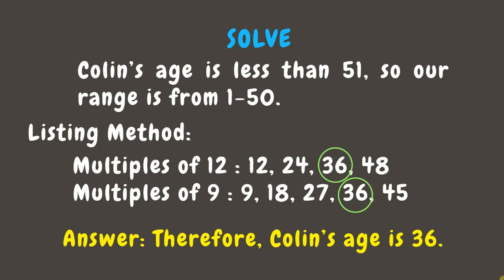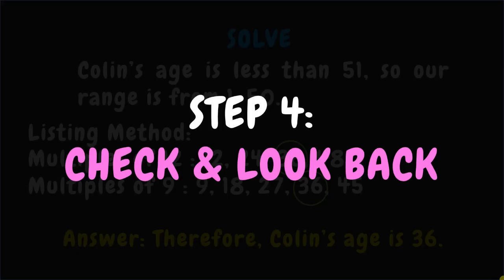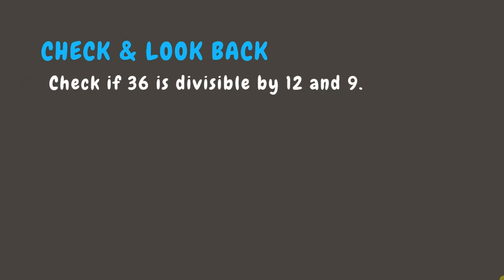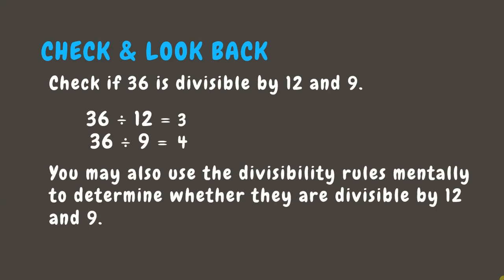On to our last step: Check and Look Back. This step is again optional but helpful to ensure our answer is correct. We can double-check to confirm that 36 is divisible by both 12 and 9 by dividing 36 by 12 and by 9. You may also use the divisibility rules mentally to determine whether they are divisible by 12 and 9.